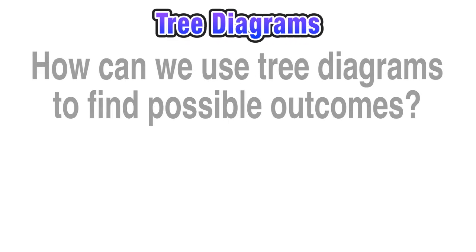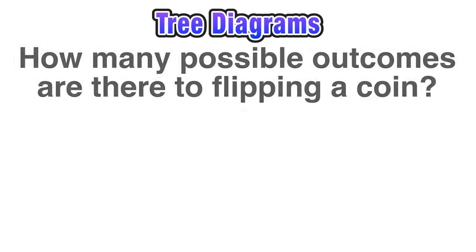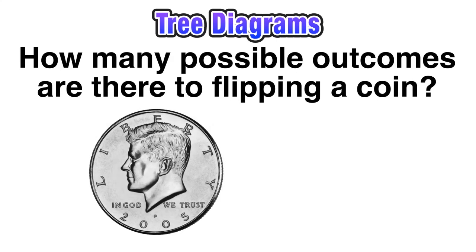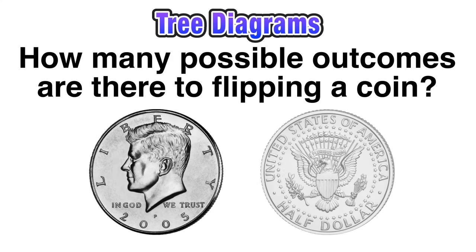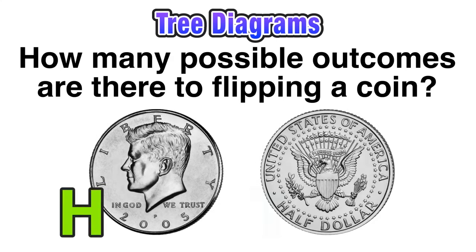So let's start off with a really easy question. How many possible outcomes are there to flipping a coin? Well we should know that we only have two possible outcomes — we can either get heads or we can get tails.